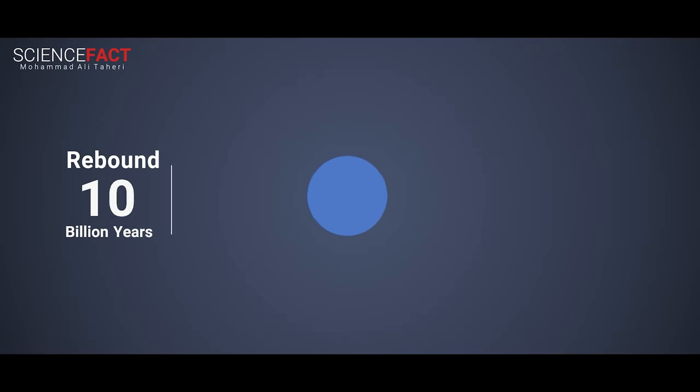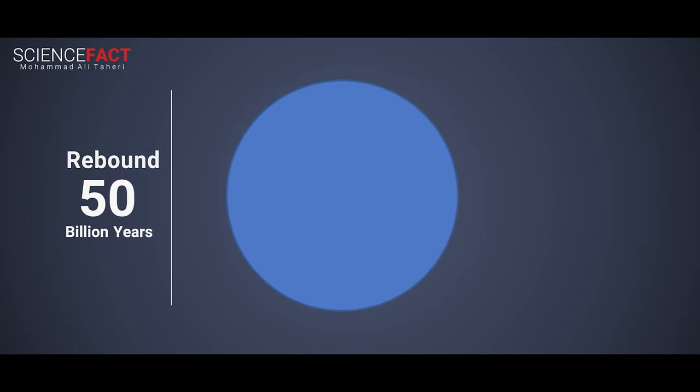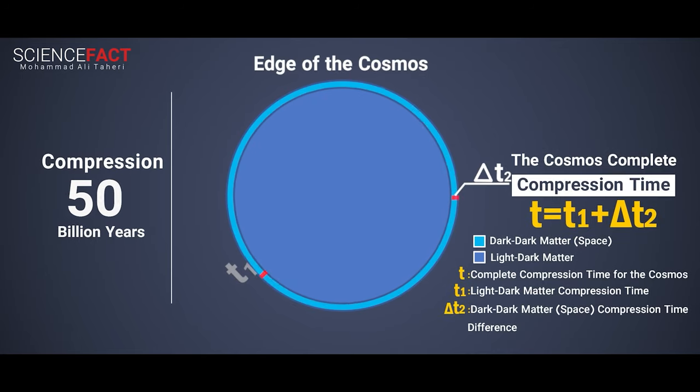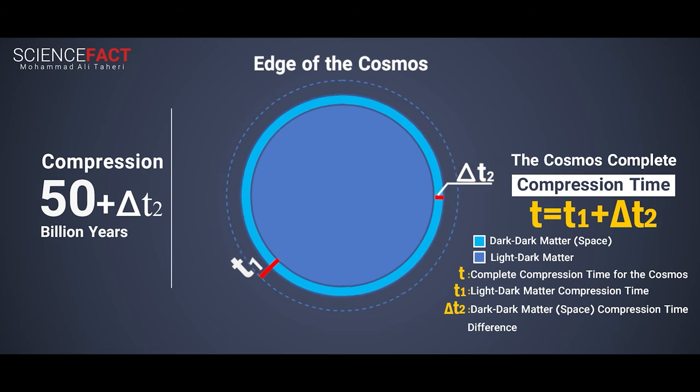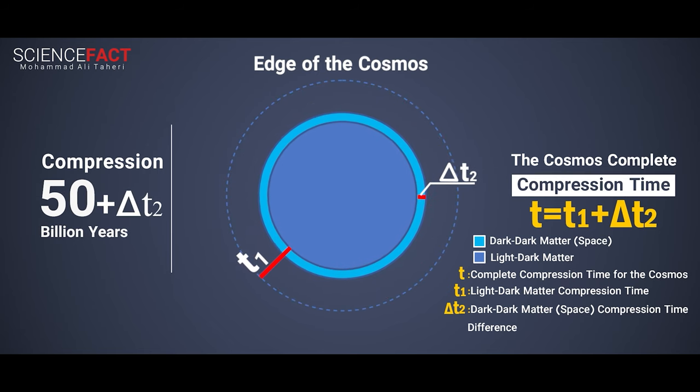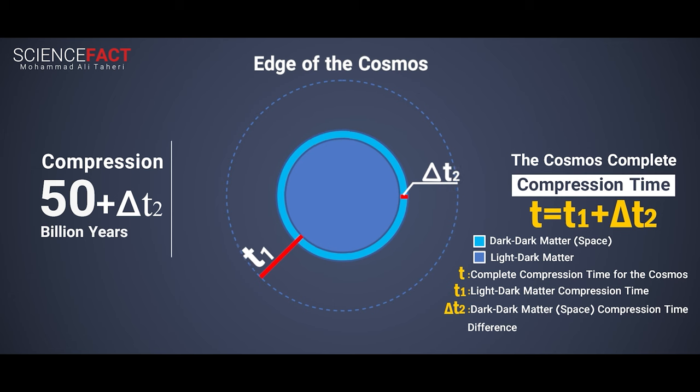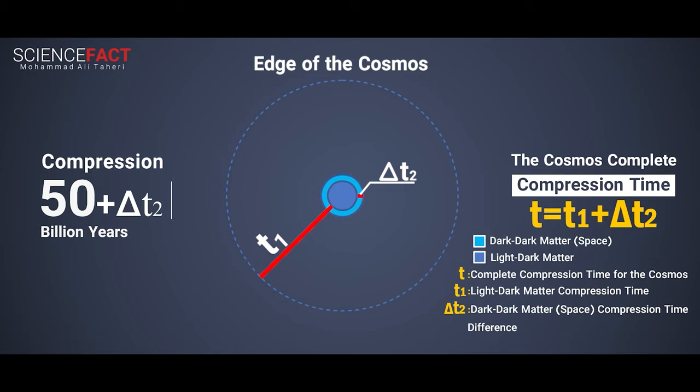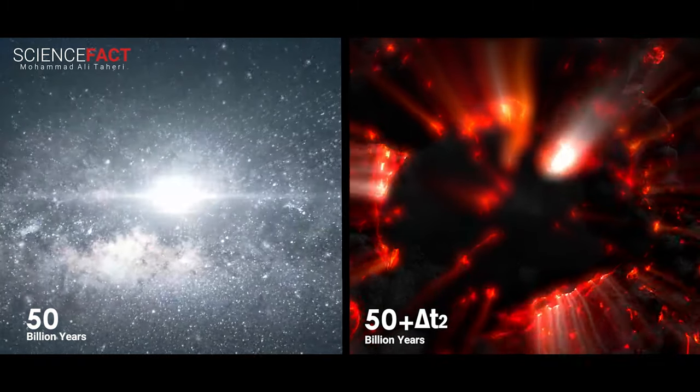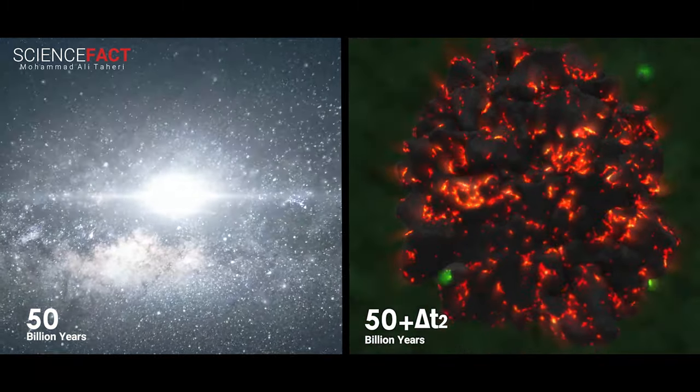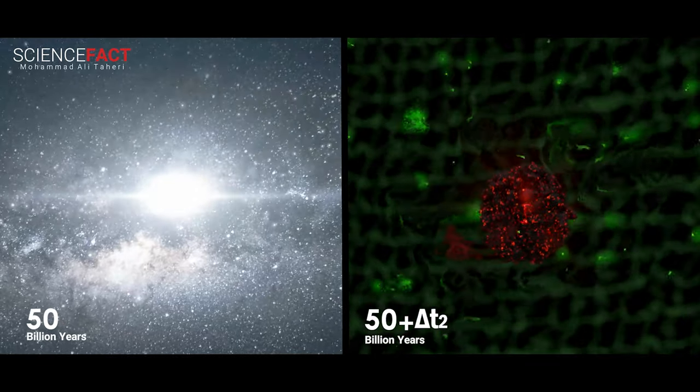If, hypothetically, the rebounding of the cosmos takes 50 billion years, the shrinking of the cosmos will take 50 billion years plus delta T2 time. In effect, the total compression time for the cosmos is equal to T equals T1 plus delta T2. With this assumption, the cosmos will reach its ultimate limit within 50 billion years, but the cosmic black hole will take 50 billion years plus delta T2 time to form.